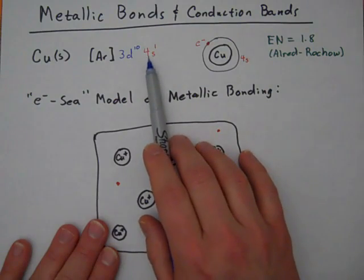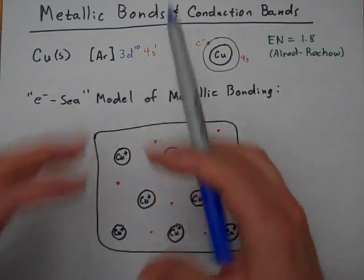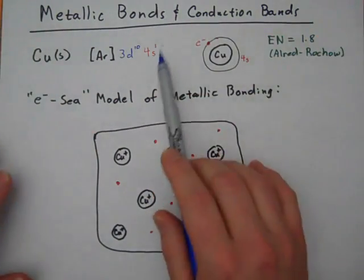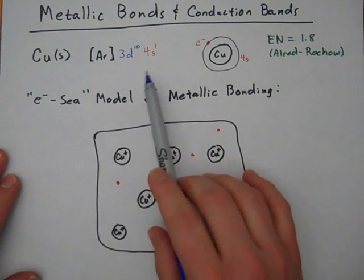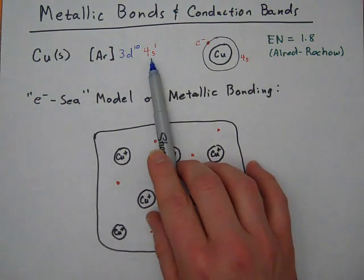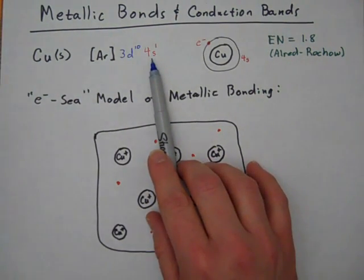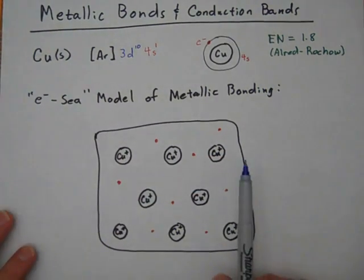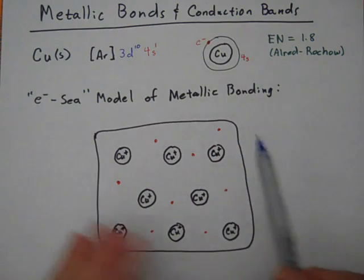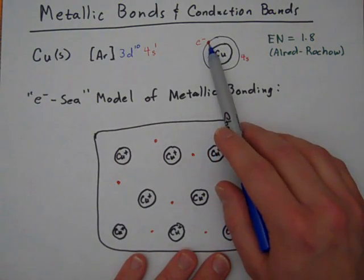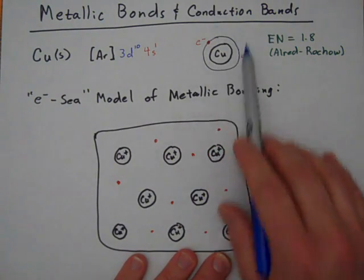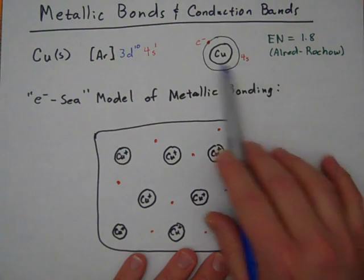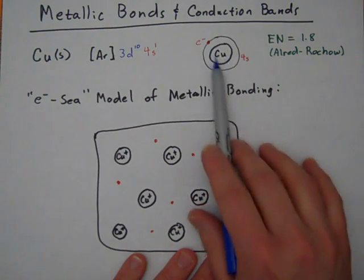The n equals 4 shell, the principal quantum number, tells us how far away from the nucleus you are. So this is the outer electron, the business electron. That's the one that will first come in contact with other atoms, and so that's where all bonding and reaction takes place, on the outside of the atom. Here's the electron in some orbit or shell, the 4s shell, and here are the rest of the electrons in the nucleus of the copper atom.